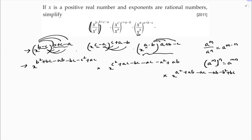Now, if there is any chance of cancellation, just cancel it and write the remaining as it is. Here bc and minus bc cancel; plus ac and minus ac cancel; plus ab and minus ab cancel. Now the bases are all the same, so I will add the powers.